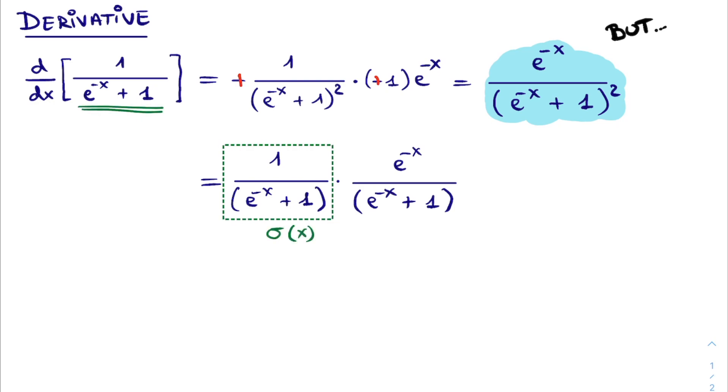For the second fraction, we would also like to get some form of the sigmoid function. We achieve this by adding 0 in the form of plus 1 and minus 1. Then, we can use this numerator to split the fraction into 1 and 1 over e to the power of minus x plus 1.